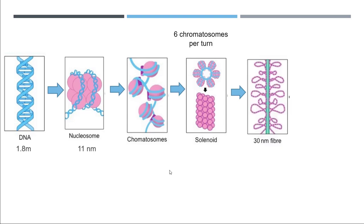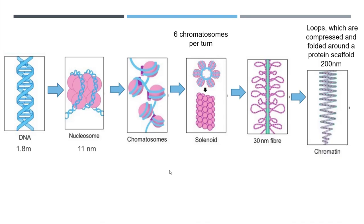The solenoids then make 30 nanometer fiber. Other proteins help with more supercoiling, and the loops compressed and folded around the protein scaffold are 200 nanometers—we call it chromatin. Chromatin is present when not dividing, but when dividing, it forms chromosomes with more coiling. The chromosome diameter is about 700 nanometers. That's how DNA wraps around itself to fit into the tiny nucleus.